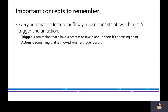A real-life example of trigger and action: think of a toy gun. When you press the trigger, the action takes place — the bullet fires. Same with a camera: before taking a picture, you press the button (the trigger), and then the action takes place. The same concept applies in Power Automate.